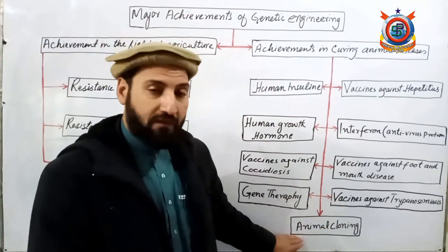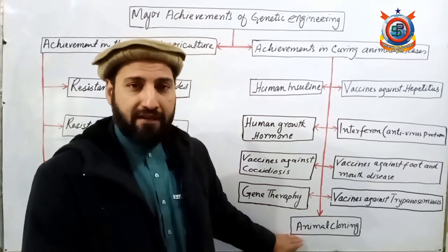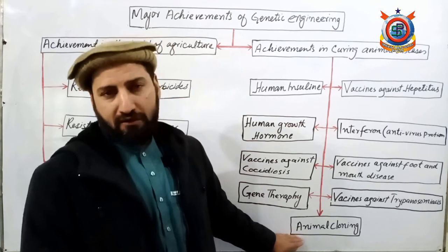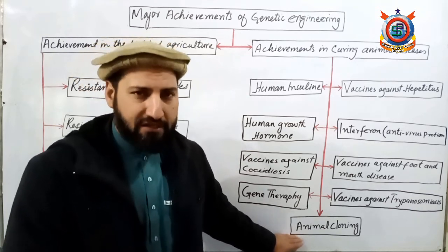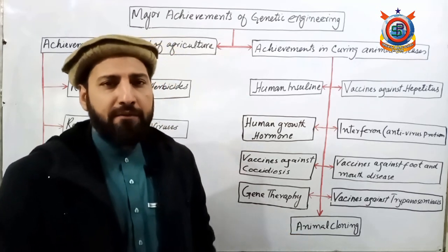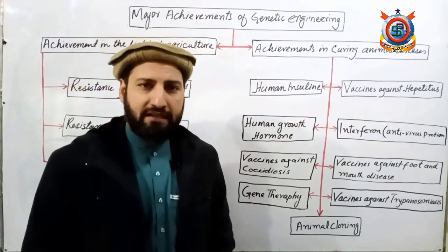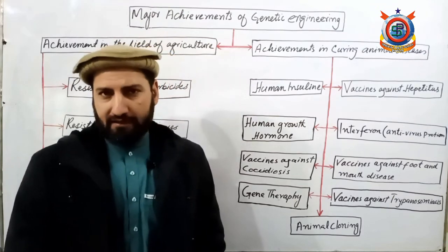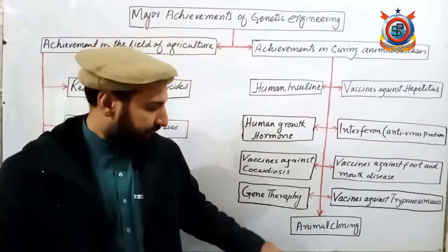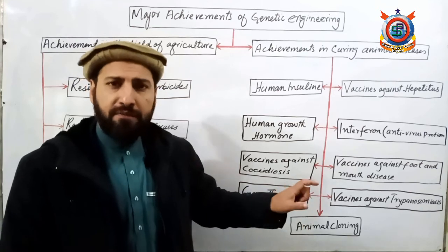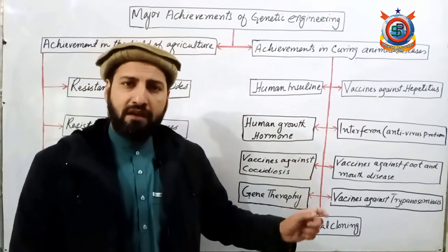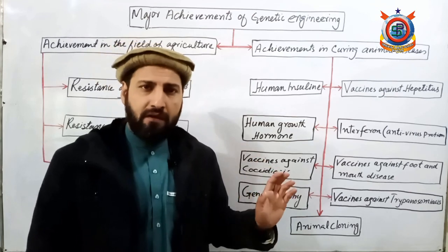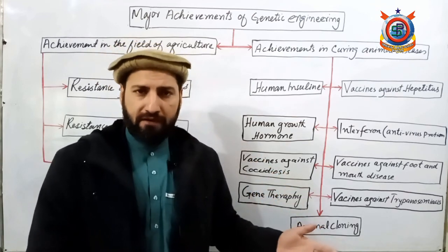آخری اور سب سے اہم achievement ہے animal cloning۔ Animal cloning میں ایک somatic cell سے پورا animal clone کیا جاتا ہے۔ یہ وہ technique ہے جس میں genetic engineers کسی بھی living organism کی exact copy بناتے ہیں۔ اس کے procedure پر اگلی video lecture میں detail میں بات کی جائے گی۔